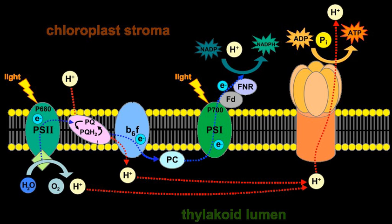PSII is extremely complex, a highly organized transmembrane structure that contains a water-splitting complex, chlorophylls and carotenoid pigments, a reaction center P680, pheophytin (a pigment similar to chlorophyll), and two quinones. It uses the energy of sunlight to transfer electrons from water to a mobile electron carrier in the membrane called plastoquinone.